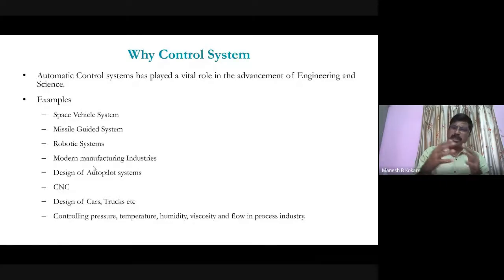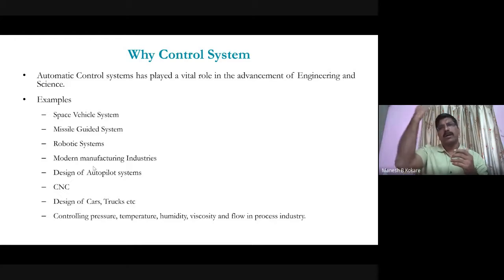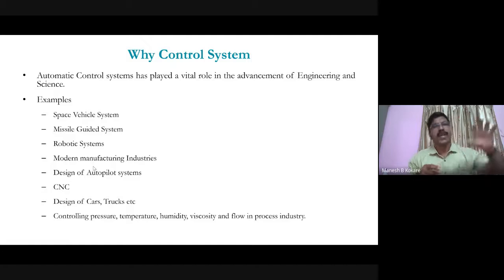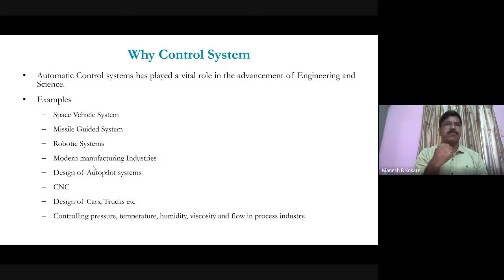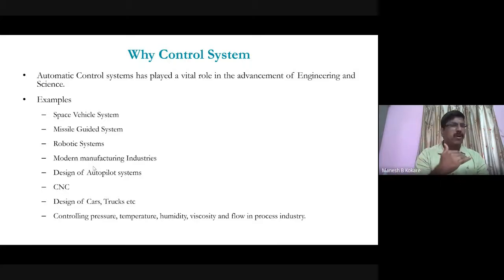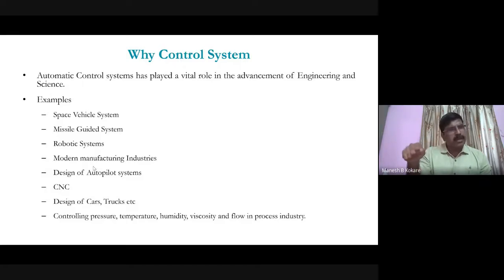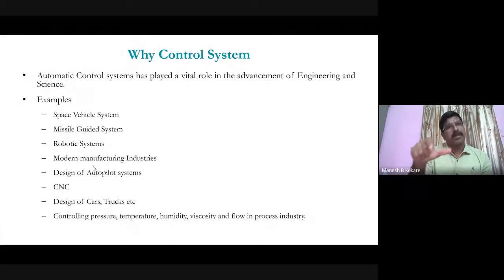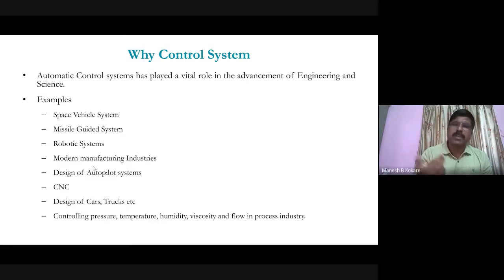Why is control system important? Consider everyday devices: a fan with a speed regulator is a control system. A tube light is an on-off control system. An electric iron is a control system — you set the knob to silk or cotton and the temperature is adjusted accordingly.